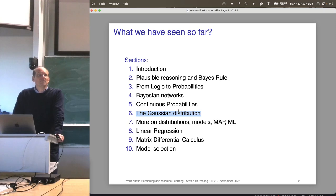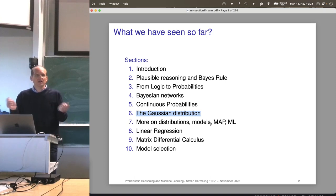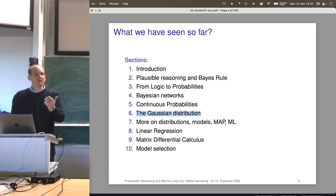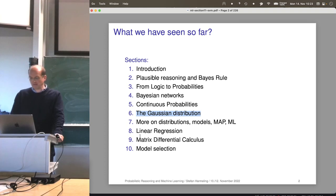These integrals are well-behaved when you have Gaussian distributions, and then typically you can do many calculations. It's also interesting to have this relationship between estimation — point estimates and posterior distributions. That's a very interesting insight. And then finally we came to our first real method, linear regression: learning a function from input to output with a model that is linear in the parameters.